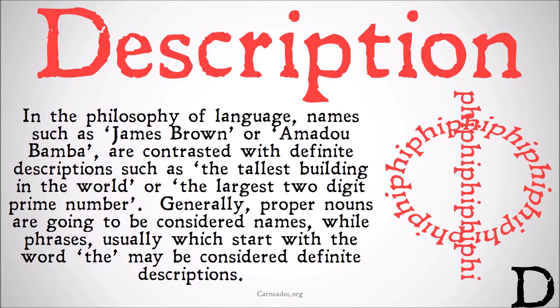In the philosophy of language, names such as James Brown or Amadou Bamba are contrasted with definite descriptions, such as the tallest building in the world or the largest two-digit prime number. Generally, proper nouns are going to be considered names, while phrases that usually start with the word 'the' may be considered definite descriptions.